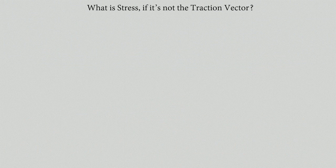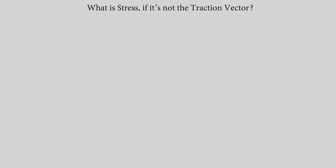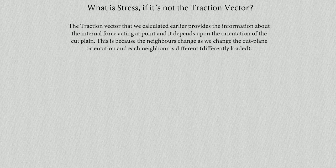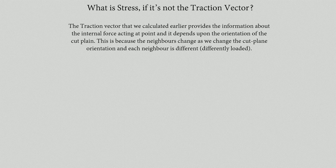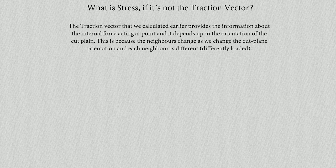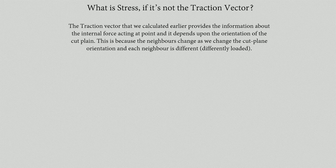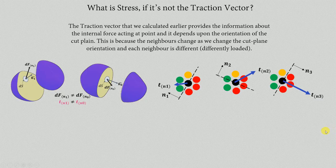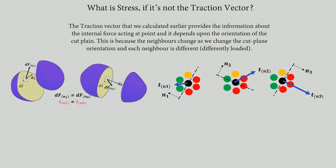So what is stress if it's not the traction vector? How is it different? The traction vector that we calculated earlier provided the information about the internal forces acting at a point, and it depends upon the orientation of the cut plane. The neighbor changes as we change the cut plane orientation, and each neighbor is different—they are differently loaded. The intuitive picture for that: the neighbor could be different, they could be differently loaded, and depending on which plane you are making observation, the traction would be different.